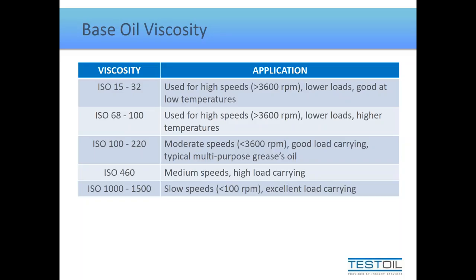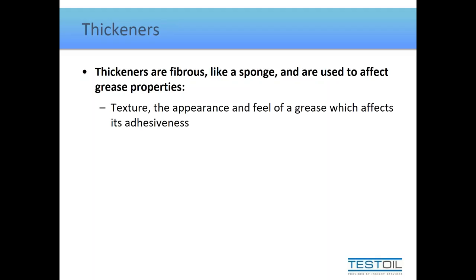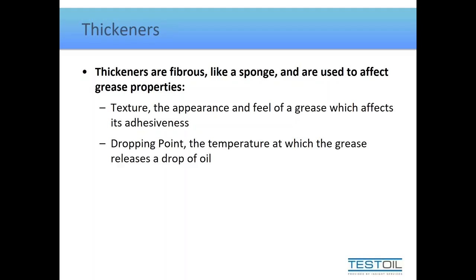The thickener acts like a sponge holding the lubricant, but it also imparts properties to the grease. One property it affects is texture — not just appearance, but how tenacious, tacky, or adhesive the grease is. It helps define how well it will transfer from one moving part to another and how well it will flow. Another property is dropping point, which largely relates to the upper operating temperature limit.